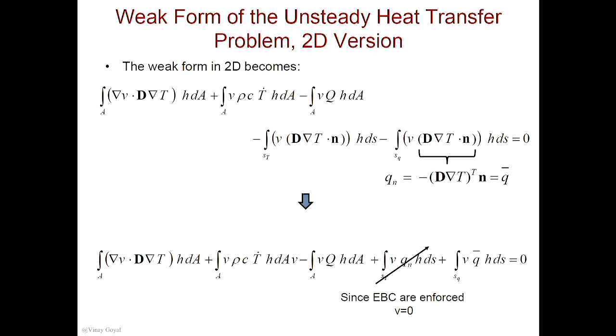You're explaining why it's the weak form. So we talked about — remember that when we used weak form Galerkin, in weak form Galerkin the weight function is selected as the basis function. Yes, we covered that. So the weight function is selected as the basis function. And recall that the basis functions have to be zero at locations where essential boundary conditions are specified. That was a requirement in weak form Galerkin.